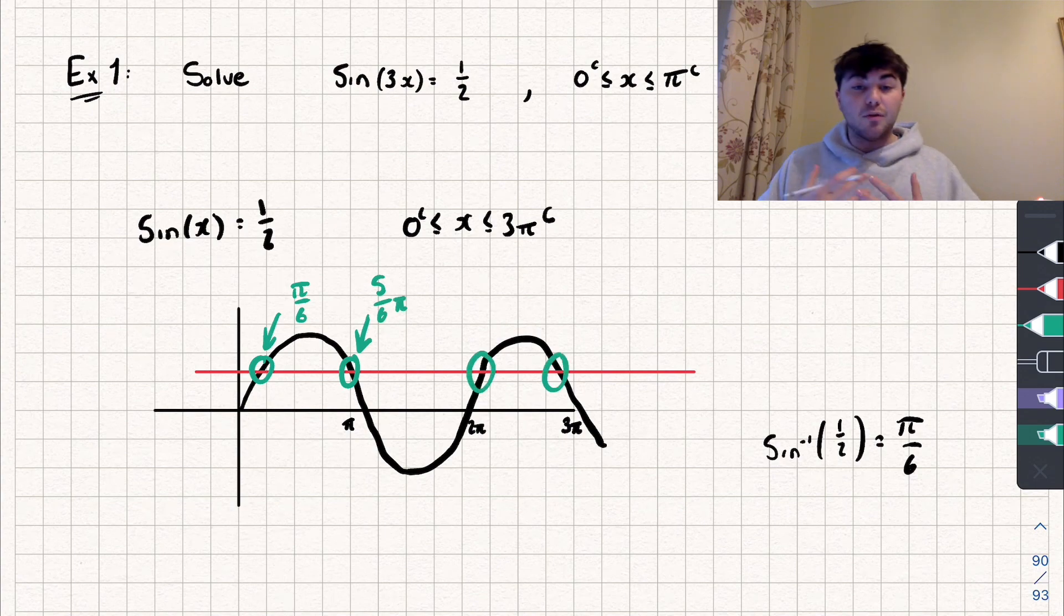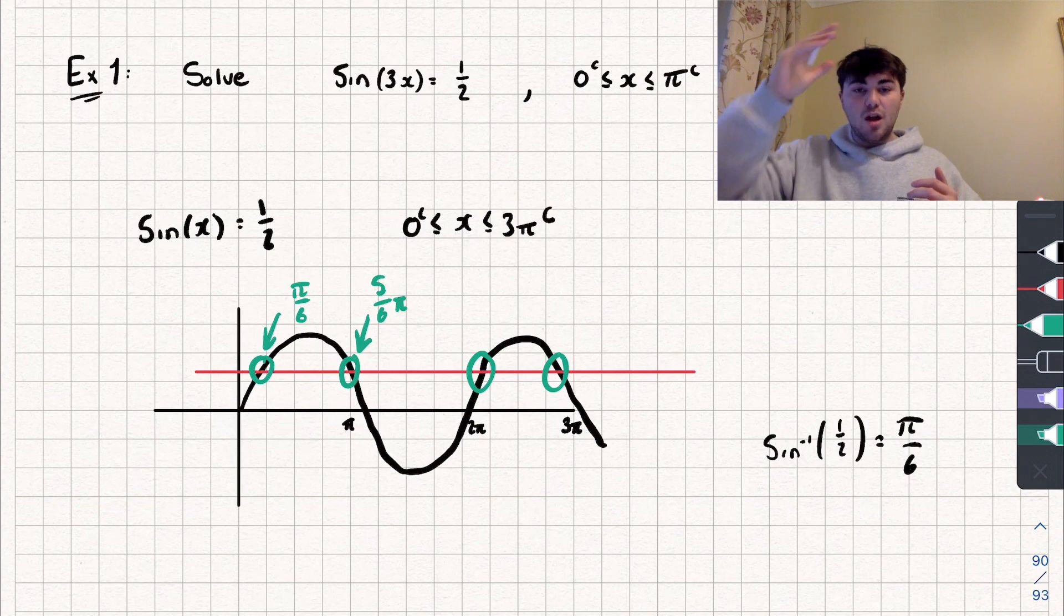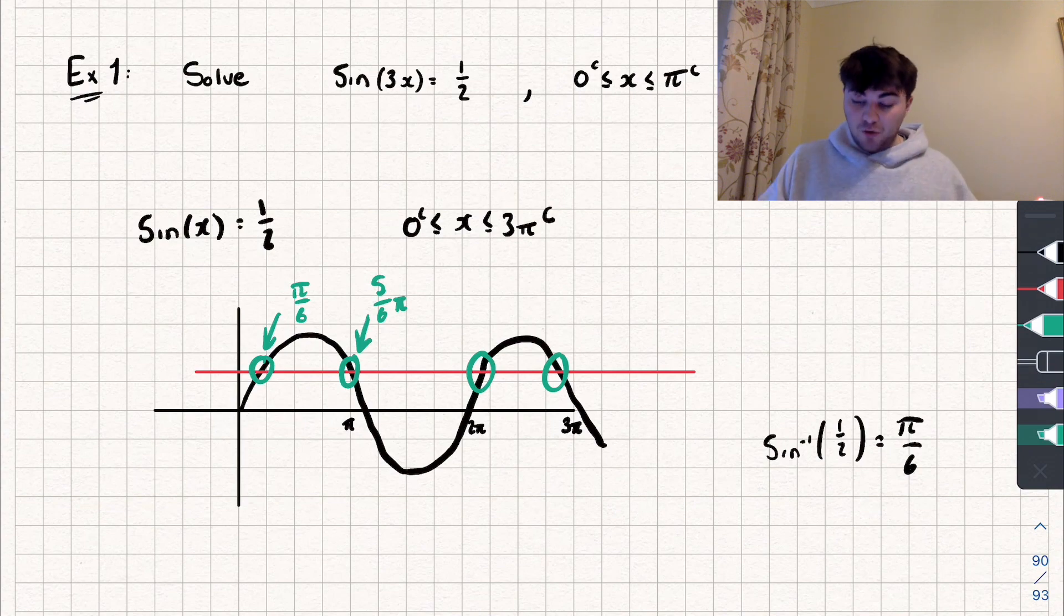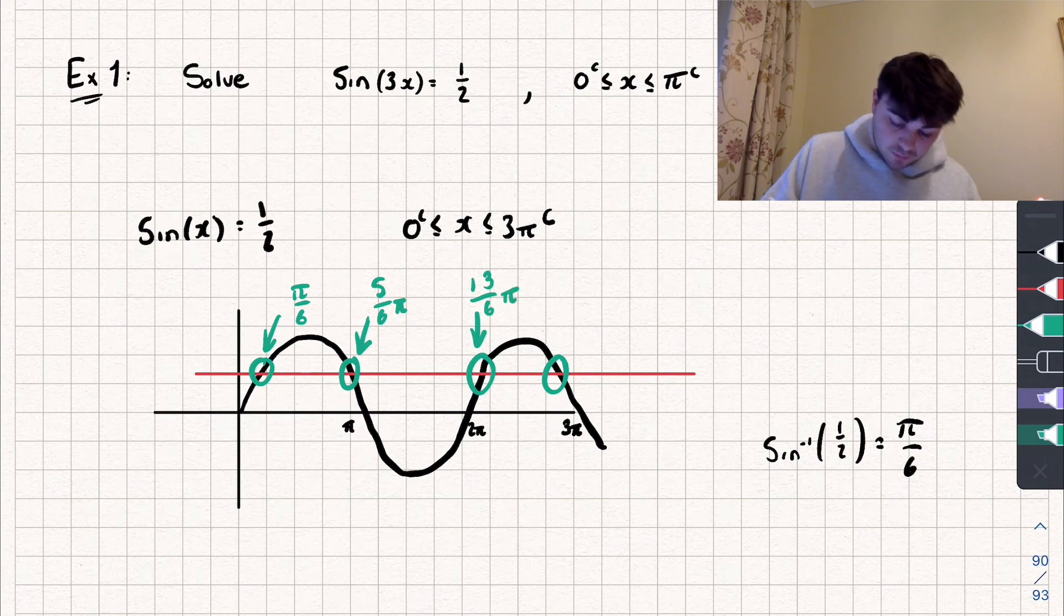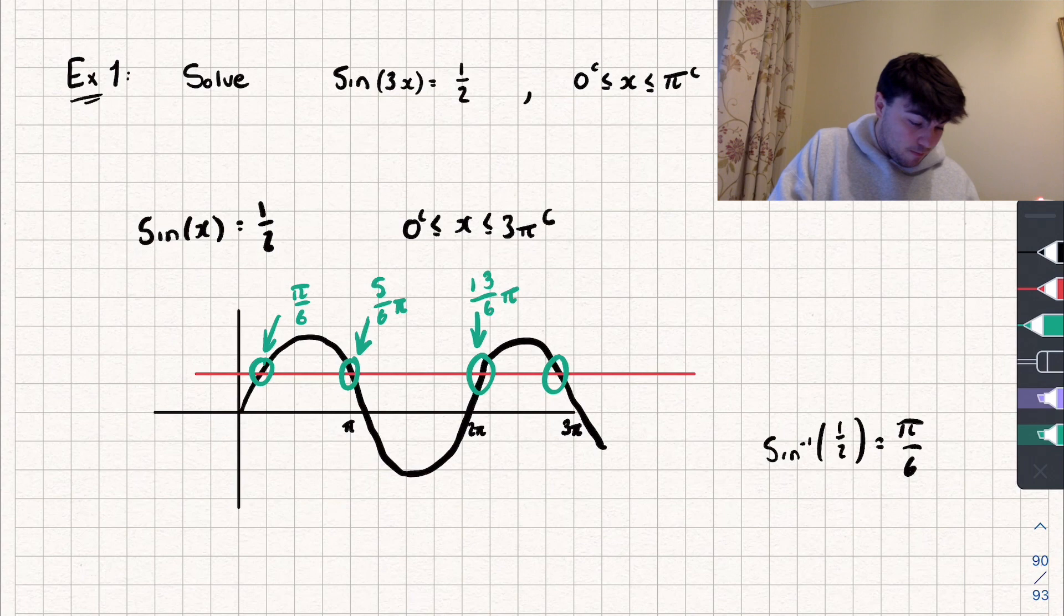And now we could use the period of this graph, which is 2 pi radians, so every 2 pi, it completes a full period. And so I could use that to help me find the final two solutions. So I could do pi by 6 plus 2 pi, that will take me to this solution here. So pi by 6 plus 2 pi, well, that's 13 over 6 pi. And then I could do, finally, 5 over 6 pi plus 2 pi, and that takes me to this solution here, which is 17 over 6 pi.